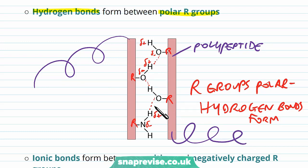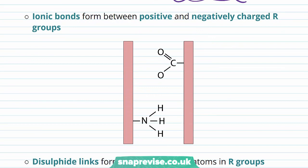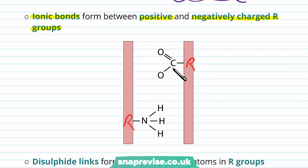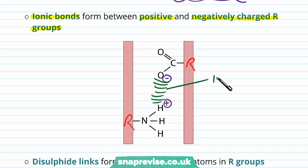It can be all sorts of different arrangements. We can also have ionic bonds in the tertiary structure. Ionic bonds involve ionic charges, so they form between any positive and negatively charged R groups. We've got an R group with an H that has a positive charge, and in this R group we've got a CO which has a negative charge. This will form an ionic attraction because opposite charges attract, so this is an ionic bond, and this will hold two parts of the polypeptide together as well.